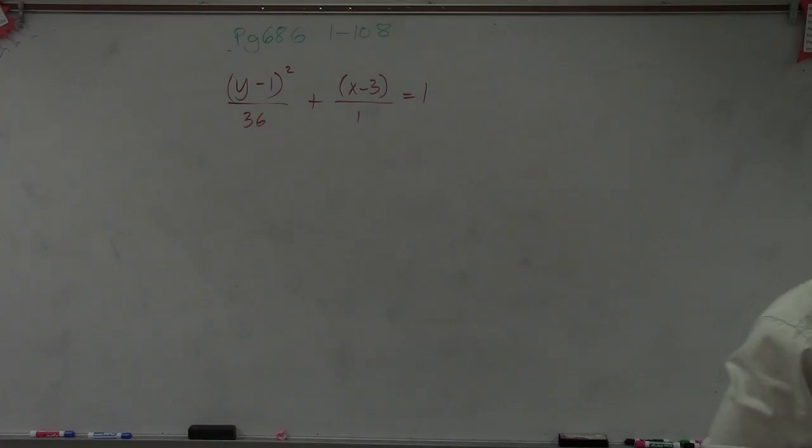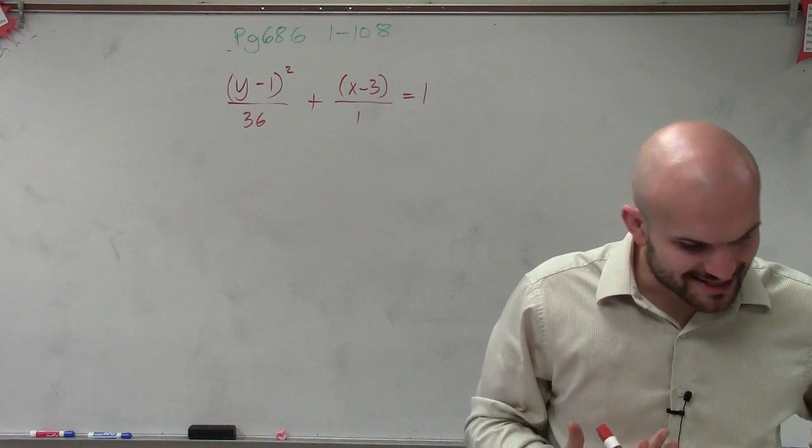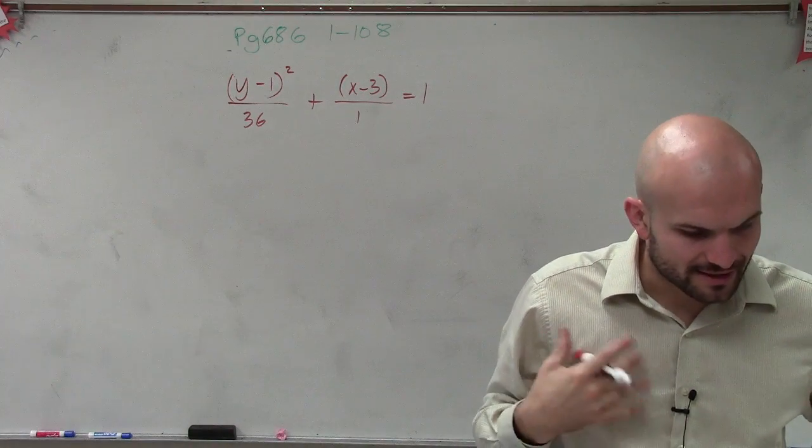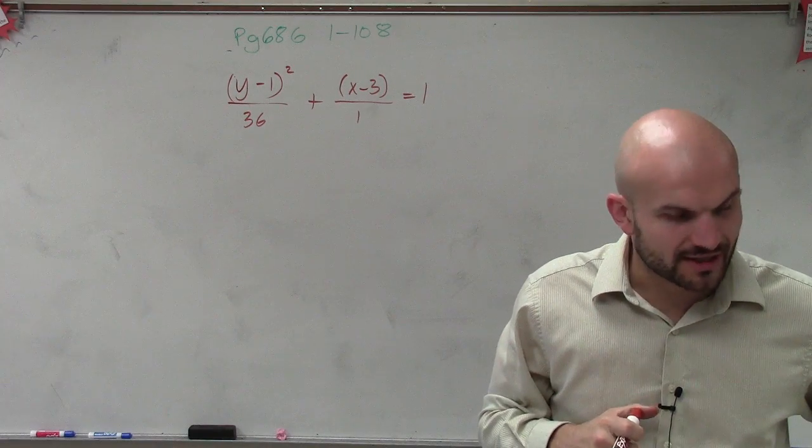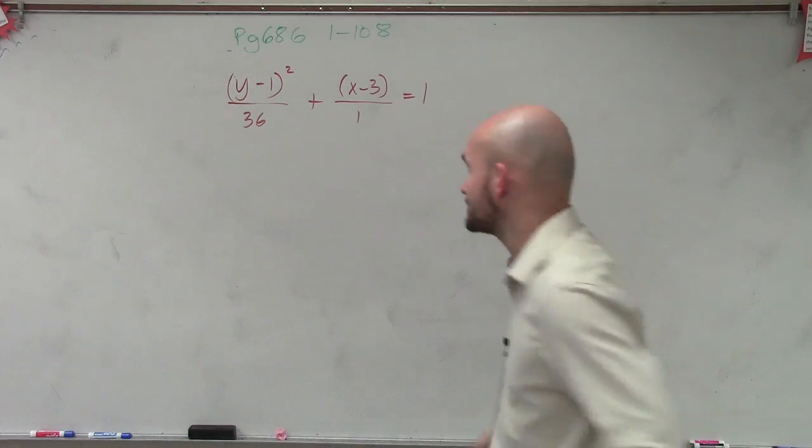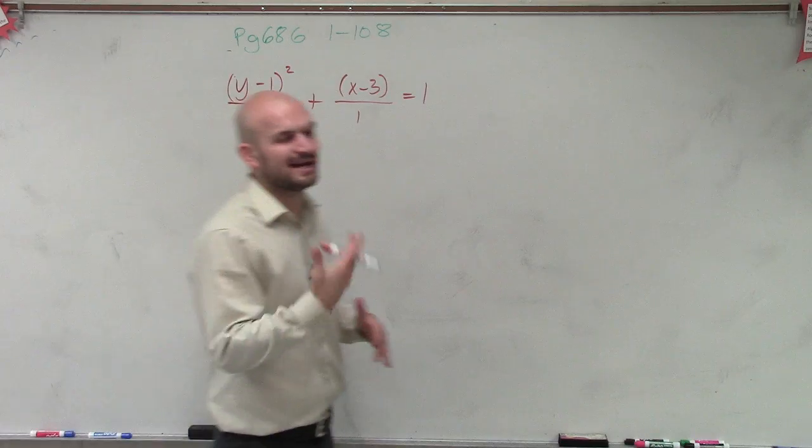For this one, Ava, what they're asking us to do is find the coordinates of the center, the foci, the lengths of the major and minor axes for the ellipse with the given equation, then we need to graph it. Alright, so first of all we need to understand where is our A and where is our B.